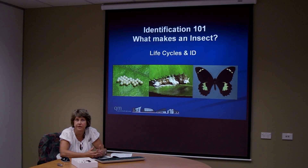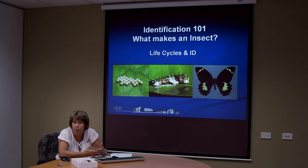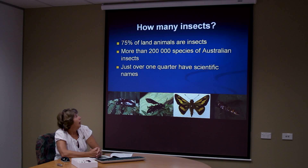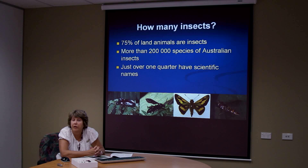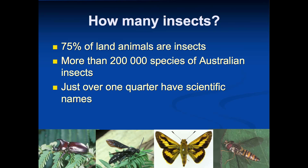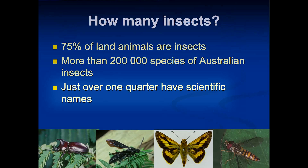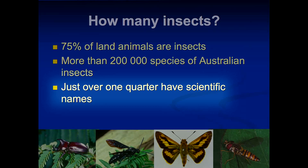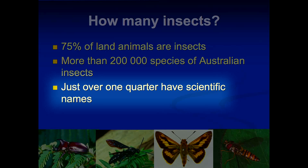The first thing we have to know is actually what makes an insect or what makes an invertebrate. And the second thing we have to realise is that many of Australian insects are actually not identified, so therefore they actually don't have a scientific name as yet. We haven't got round to identifying them.